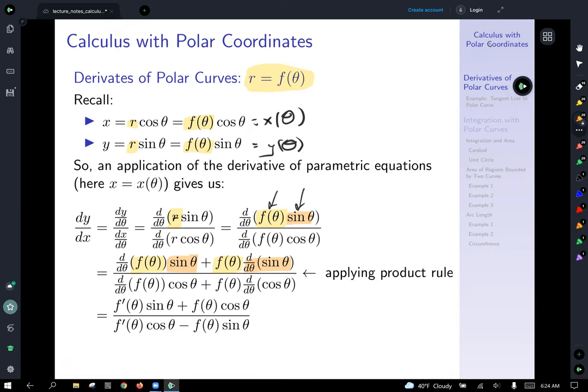We can tidy this up notationally by using f prime of theta times sine of theta, because the circled and red highlighter is the same thing as saying f primed of theta.